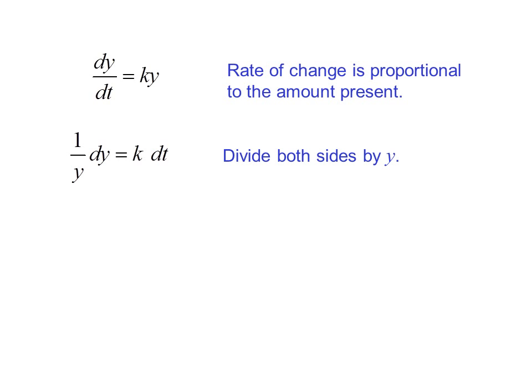If we divide both sides by y, then we can integrate both sides because it was a separable differential equation, giving us the natural log of the absolute value of y equals kt plus c.